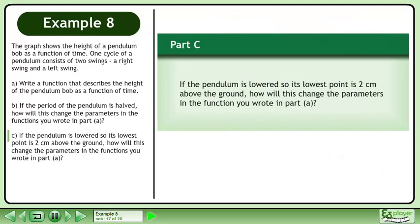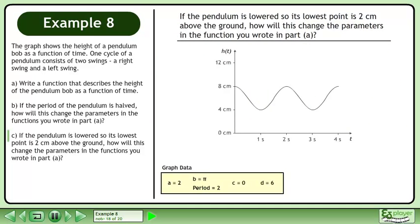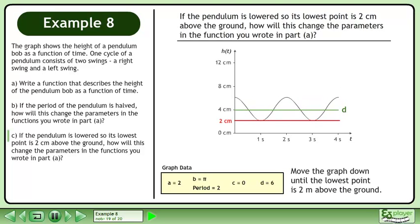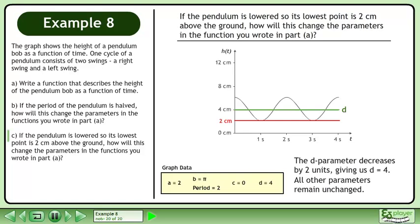Now we'll move on to Part C. If the pendulum is lowered so its lowest point is 2 cm above the ground, how will this change the parameters in the function you wrote in Part A? Bring up the graph we drew in Part A. Move the graph down until the lowest point is 2 cm above the ground. The d parameter decreases by 2 units, giving us d = 4. All other parameters remain unchanged.